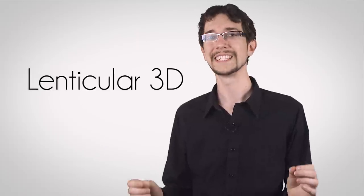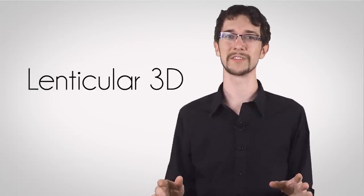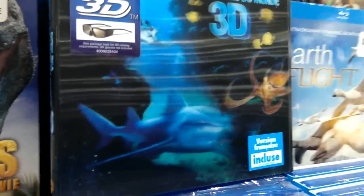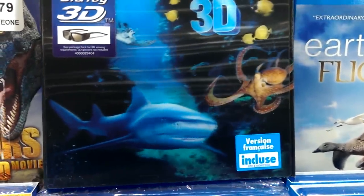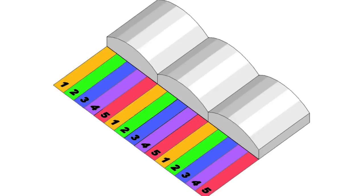But what if you don't want to have to wear glasses at all? Lenticular 3D is a very clever method that doesn't require glasses. You've probably seen these before, but have no idea how they work. A lenticular lens is placed on top of two or more interlaced images, which will only show each of these images from different viewing angles. Close up, it looks something like this.